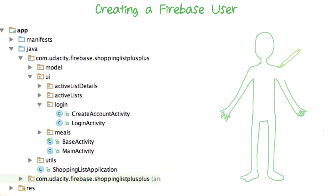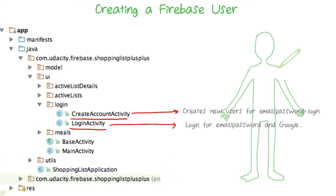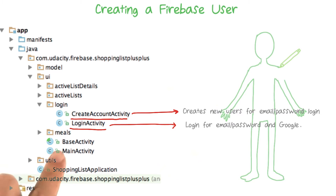We've got two new activities here. First is the login activity, which supports both email password and Google login. And second, we've got the create account activity. This creates new users with the email password login provider. I haven't added any of the Firebase authentication capabilities yet, so what I'd like you to do is start by adding the code for making a new account in the create account activity. After all, we can't log anybody in if they're not created.